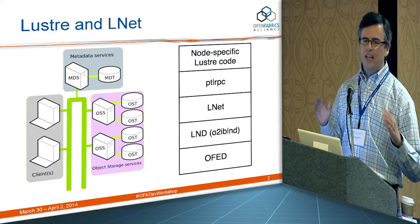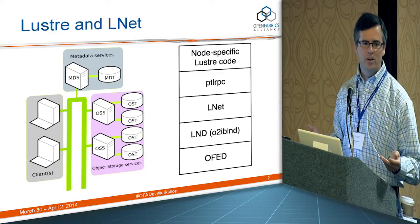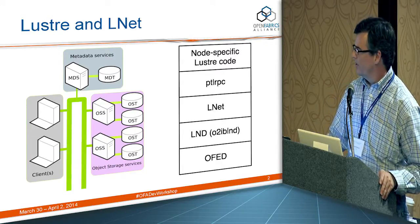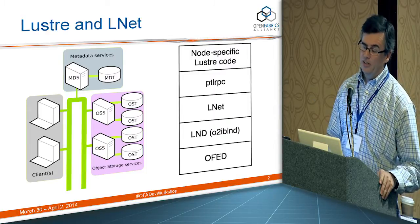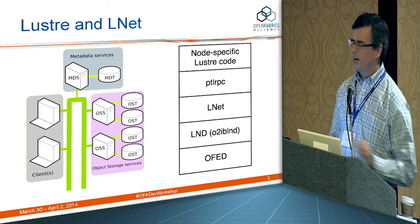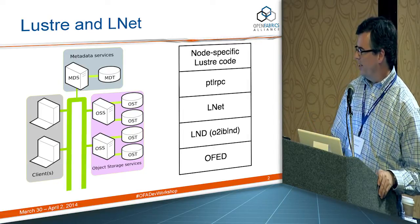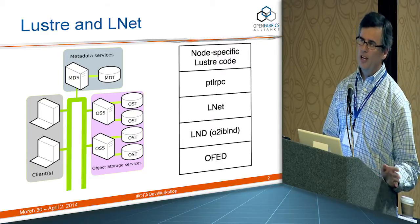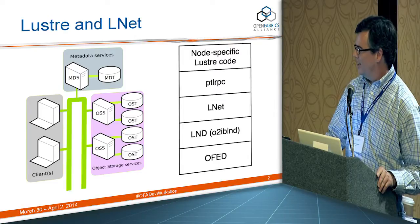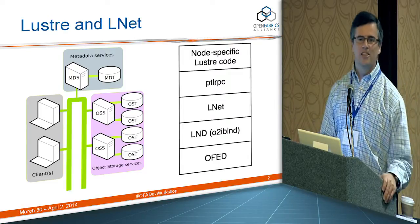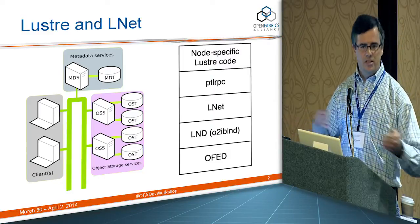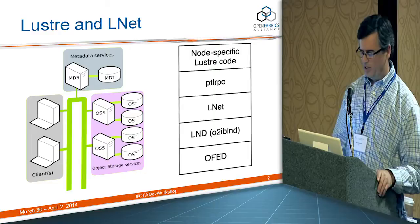The LNET block represents the common block of code for all Luster networking, regardless of the fabric being used. The LND layer — the LNET network driver — is the code specific to the fabric in use. In the case of OFED, it's the O2IB LND layer: O stands for OFED, 2 is the second version, and IB is InfiniBand. The LND then talks directly to the OFED driver to handle all InfiniBand communication. Importantly, all of this networking stack resides in kernel space — we talk directly to the OFED driver via kernel function calls, with no intermediate API.